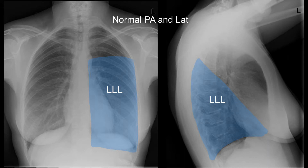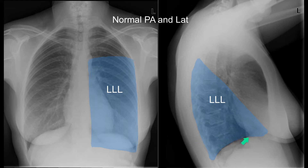On the PA chest radiograph, the left lower lobe occupies this degree of surface area on the two-dimensional film. Note that a proportion of the left lower lobe is projected below the diaphragm. Anatomically it is above the diaphragm, but as the X-ray beam hits the interface tangentially — usually the dome — there is a proportion of lung that will always be projected below the diaphragm. The oblique fissure goes from T4 to the anterior cardiophrenic angle.